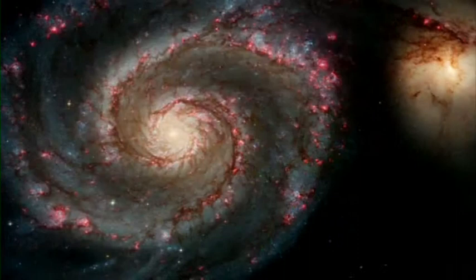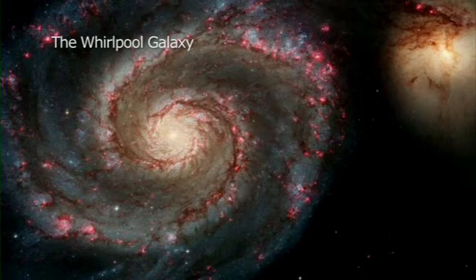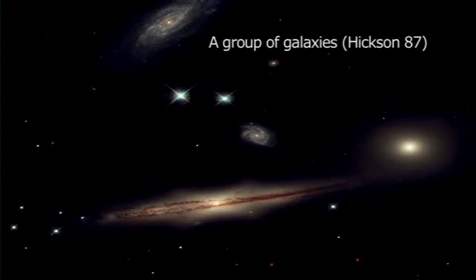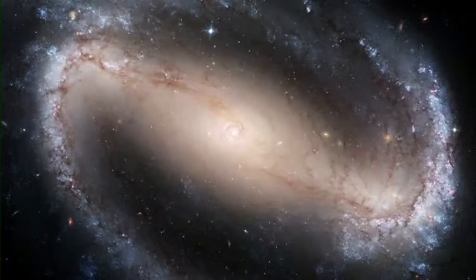A galaxy is an immense collection of stars, gas, dust and dark matter. A typical galaxy has something like 200 billion stars in it. Galaxies come in an amazing variety of sizes and shapes, from something very smooth like this elliptical galaxy to a spiral like the one we live in.